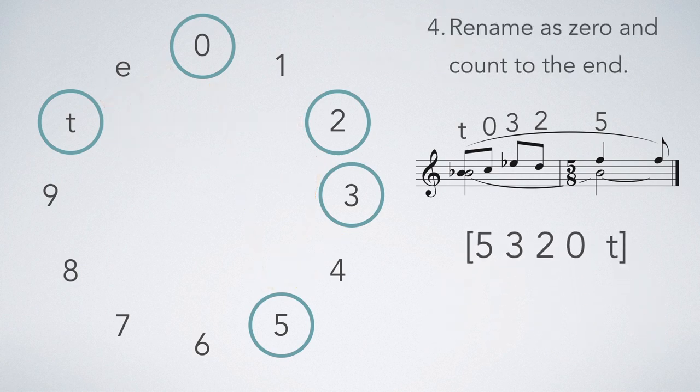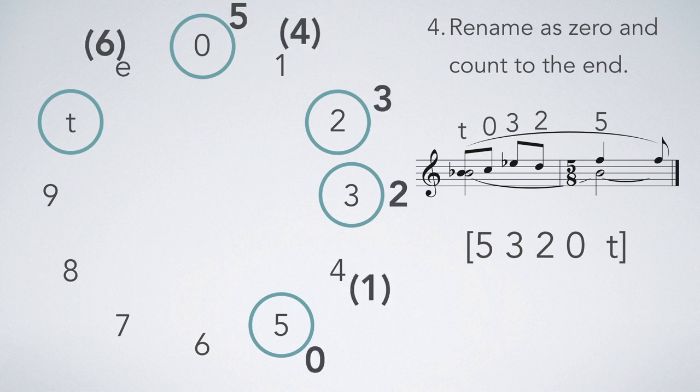And the easiest way to do so is to start with whichever end we decided we should start with in the last step, in this case, pitch class 5. Now, regardless of what pitch class you start with, rename it 0, and then count around the circle until you reach the end of your set. 0, 1, 2, 3, 4, 5, 6, and 7.